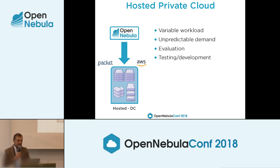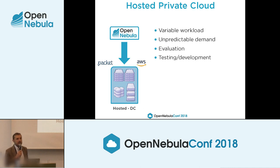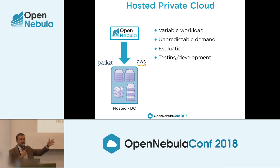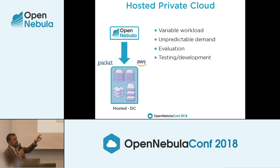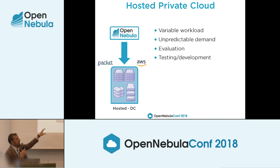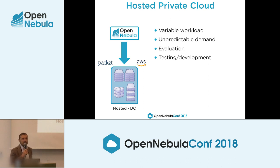With OpenNebula, you can also build a hosted private cloud, where the infrastructure is not on-site but provided or hosted by a service provider — you pay a monthly, hourly, or daily rate to access the resources. A very good example is building an OpenNebula cloud using bare metal cloud providers. We have published two guides: one about building an OpenNebula cloud hosted in Packet, and one about AWS bare metal instances.